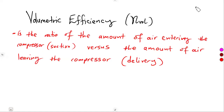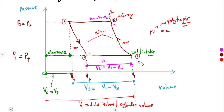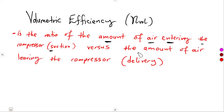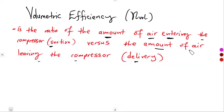The volumetric efficiency, as stated in this definition, we are going to consider as the ratio of the amount of air entering the compressor at the suction, which is the effective volume, versus the amount of air leaving the compressor at the delivery. In actual sense, if we take this statement with the formula, it might not make that much sense, but let us make sense out of it from the formulas.